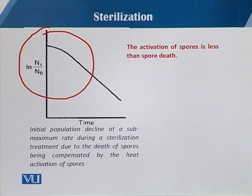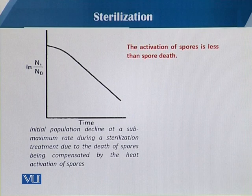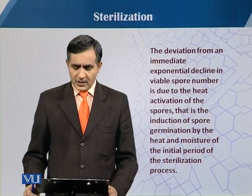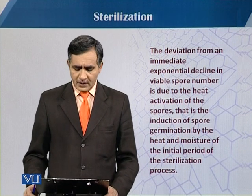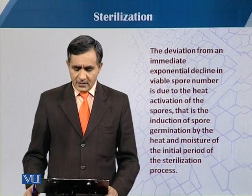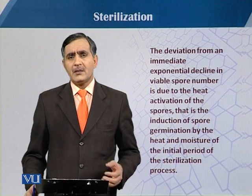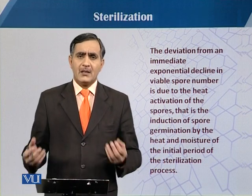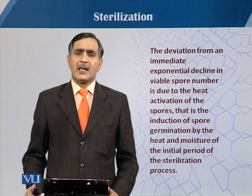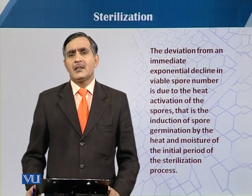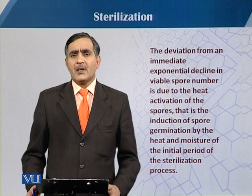This can happen when we are dealing with cultures having contamination with endospore-forming bacteria or any such organism. The deviation from an immediate exponential decline in viable spore number is only due to the heat activation of the spores — that is, the induction of spore germination by the heat and moisture during the initial period of the sterilization process. When there is both heat and a wet condition, the spore immediately starts germination.